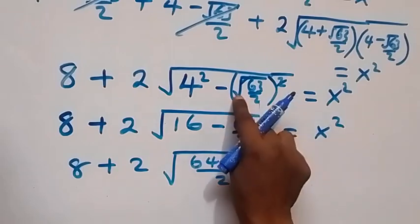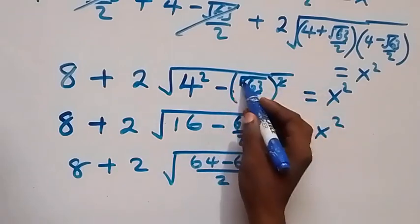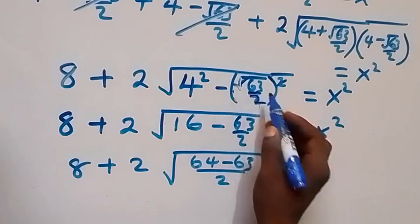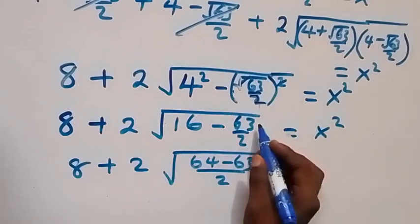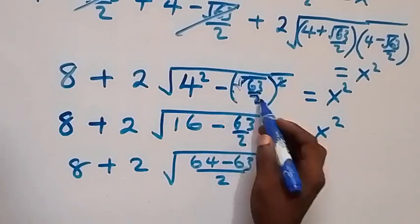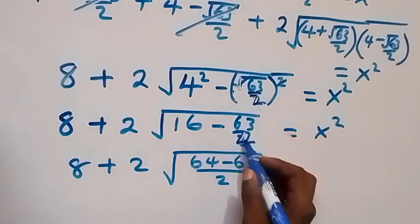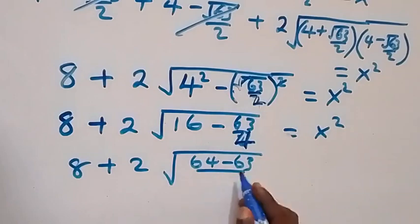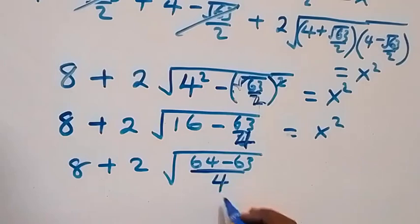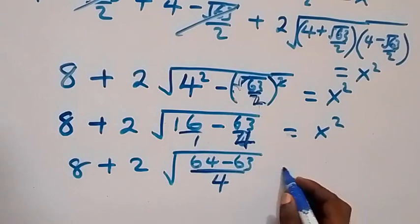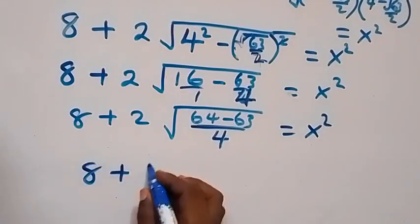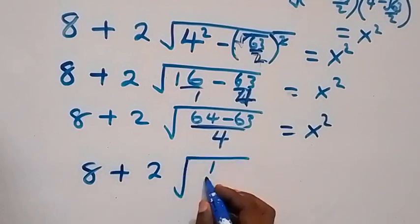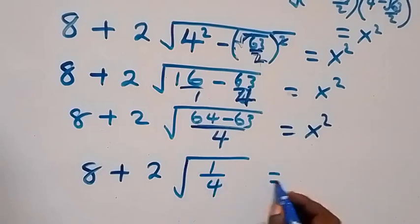There is a correction here: the 63 carries a square root, so squaring cancels the root 63 leaving 63, and 2 squared gives 4. So we have 64 minus 63 over 4, which equals x squared. This simplifies to 8 plus 2 times the root of 1 over 4, which equals x squared.